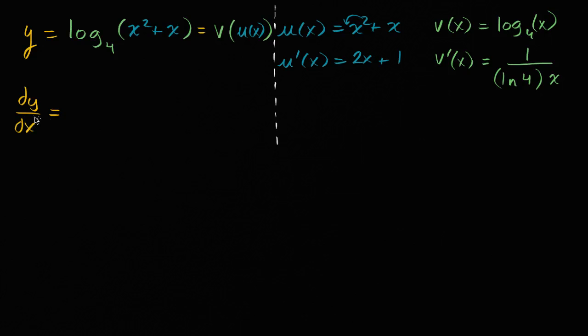And so we know from the chain rule, the derivative of y with respect to x is going to be the derivative of v with respect to u, or we could call that v prime of u of x, times u prime of x.